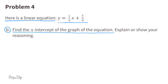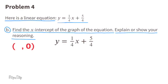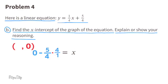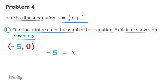Part b: find the x-intercept of the graph. To find the x-intercept, the y-value must be 0, so substitute y with 0. Subtract 5 fourths from both sides: 0 minus 5 fourths. Multiply 1 fourth by its reciprocal 4 over 1, and multiply negative 5 fourths by 4 over 1 as well. 1 fourth times 4 is 1, so x remains. 5 times 4 is 20, and 20 divided by 4 is 5, so 0 minus 5 is negative 5. The x-intercept is at the point (negative 5, 0).